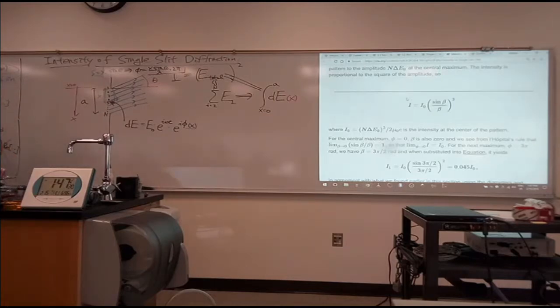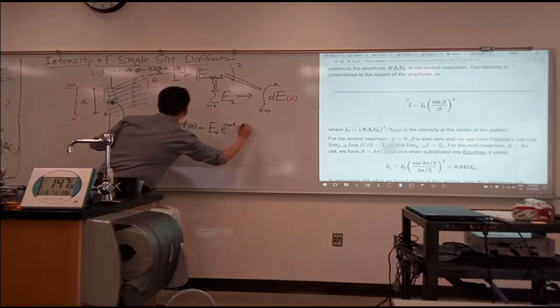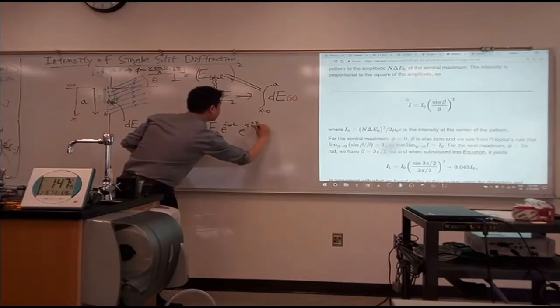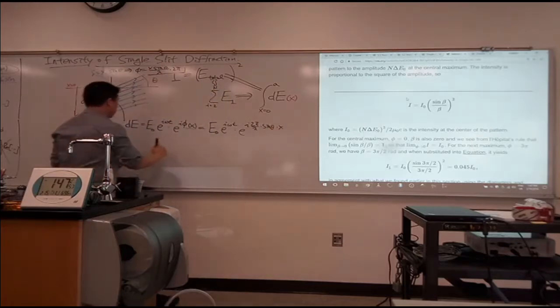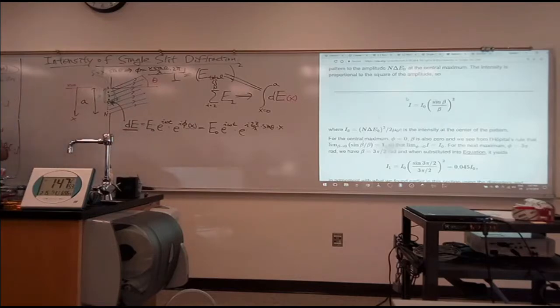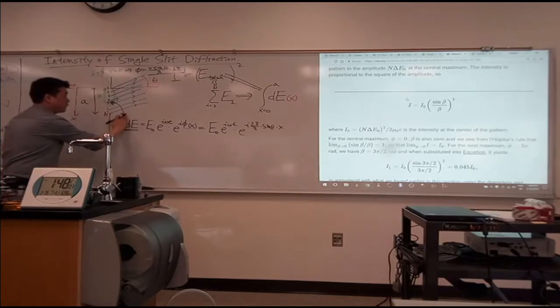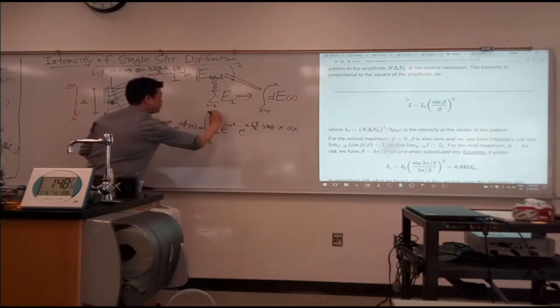All right, so let me actually write that out. So that's equal to e naught e to the i omega t times e to the i 2 pi over lambda times sine theta x. All right, so this is my expression for infinitesimal contribution to the electric field. Let me integrate. So for the total electric field, what I need is I need to integrate. Integrate it from x equals 0 to a. Integrate it with respect to x from x equals 0 to a.